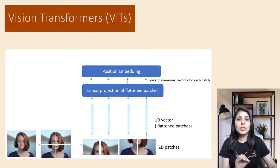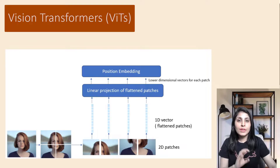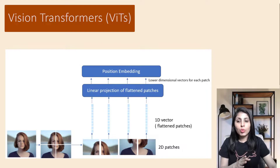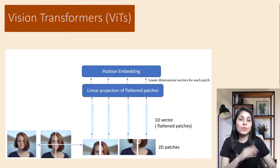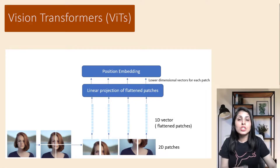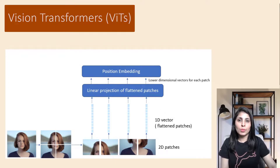Positional embedding is added to each image patch, indicating each patch's location in the image. We use positional encoding because when we feed data to a transformer, we feed all the data at once — the transformer doesn't know which patch is first, second, or third in the image. With positional embedding, we provide that position information to the transformer.